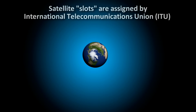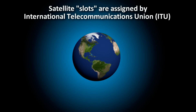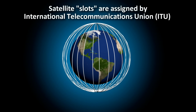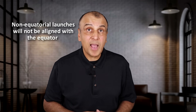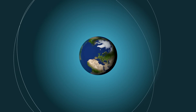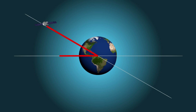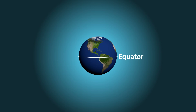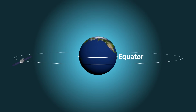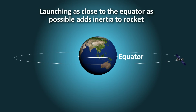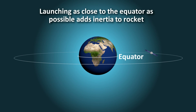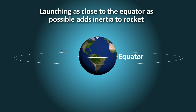This orbital real estate is a prized commodity, tightly controlled by the International Telecommunications Union (ITU), which assigns each satellite a slot at this perimeter. Additionally, unless the rocket is launched from somewhere on the equator, the orbit will be inclined relative to the equator. For example, satellites launched from Cape Canaveral, Florida — at about 28.5 degrees north latitude — will have an orbit inclined 28.5 degrees from the equator, requiring fuel to correct. It is therefore beneficial to launch rockets as close to the equator as possible, which also gives added inertia from the earth's greater rotational speed near the equator.